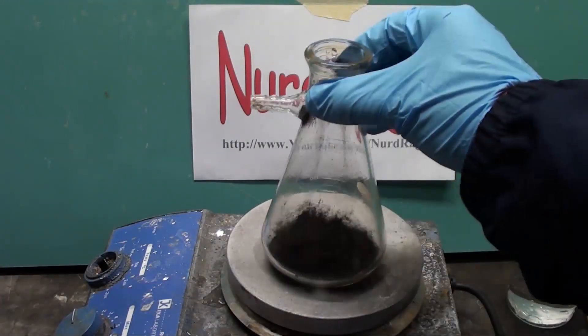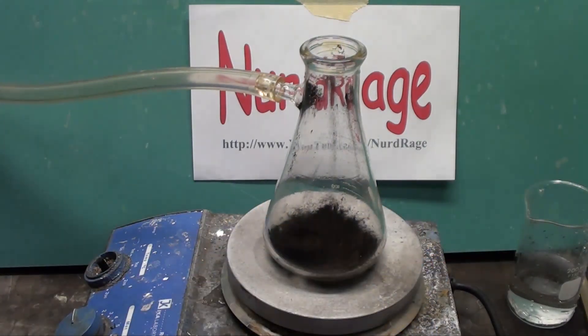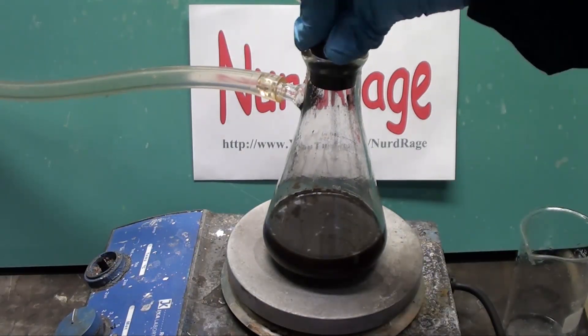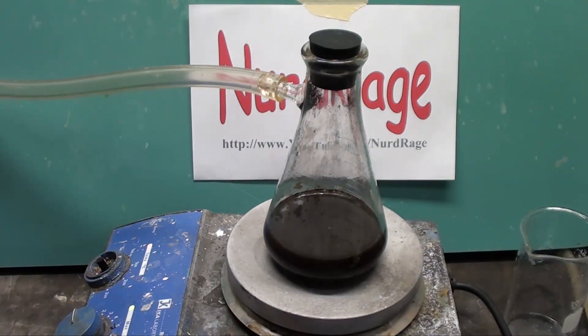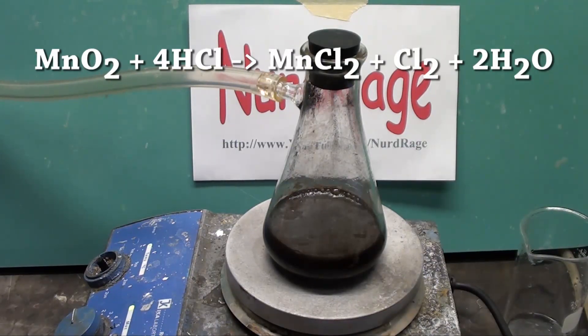Okay, onward. The classic method is to get some manganese dioxide and add at least four mole equivalents of concentrated 12 molar hydrochloric acid. Heating the mixture will drive the reaction to completion. What's happening is the manganese dioxide is oxidizing the chloride ions to form chlorine gas and manganese chloride.